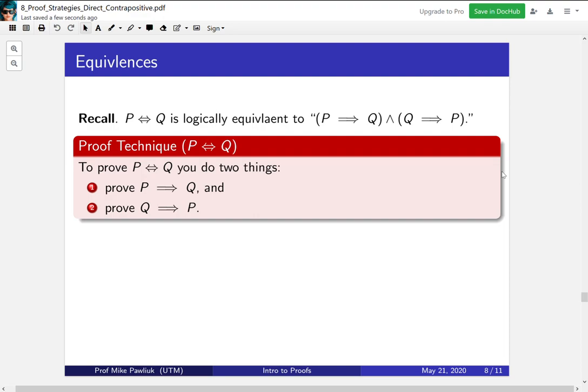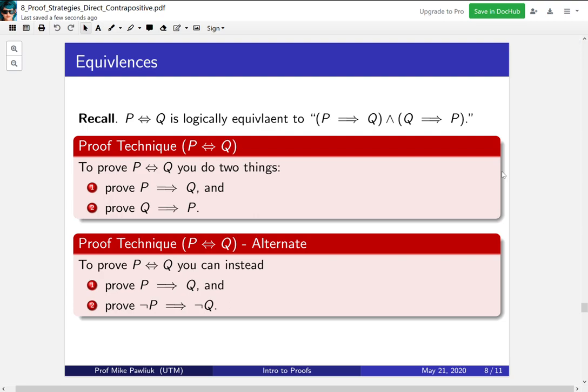Alternatively, because we know that Q implies P, we can rewrite it in something logically equivalent. So this gives us an alternate proof technique for proving P if and only if Q. You can prove P implies Q, and you can prove not P implies not Q. So formally, this is proving the contrapositive of the second part. But rather than think about it technically, it's helpful to think about it from an intuitive point of view. The first one is saying, if P is true, then Q is true. And the second one is saying, if P is false, then Q is false. So this is really what if and only if feels like.